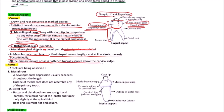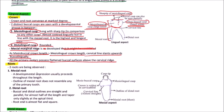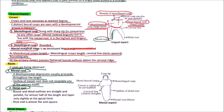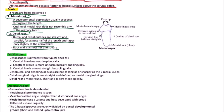All primary molars possess flattened buccal surfaces above the cervical ridge. For the roots on the lingual aspect: the mesial root has a developmental depression that usually proceeds throughout its length. The mesial root does not resemble any of the primary tooth roots. The distal root has buccal and distal outlines that are straight and parallel for almost half the length, diverging only slightly from each other, tapering slightly at the apical third, with the root end being almost flat and square.